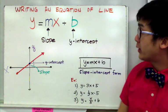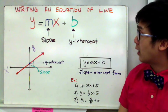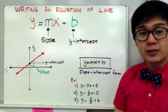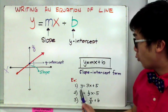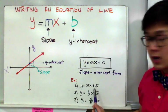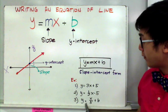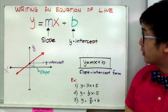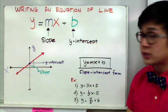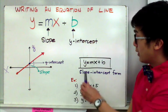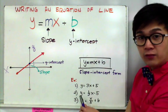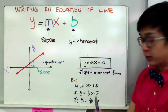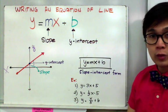For today, we're just going to concentrate on how to write the equation of a line using this form. Several examples of the slope-intercept form will be given as y equals 3x plus 5, y equals 1/2 x minus 5, and y equals x over 5 plus x. Remember that when writing the equation of a line in this form, y is always by itself, equal to an x term plus or minus a number.